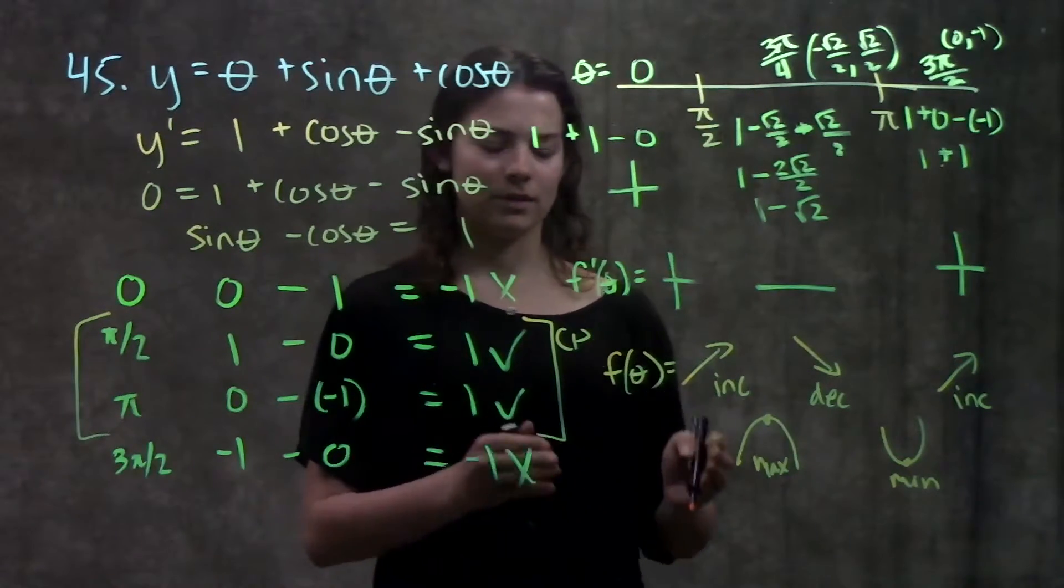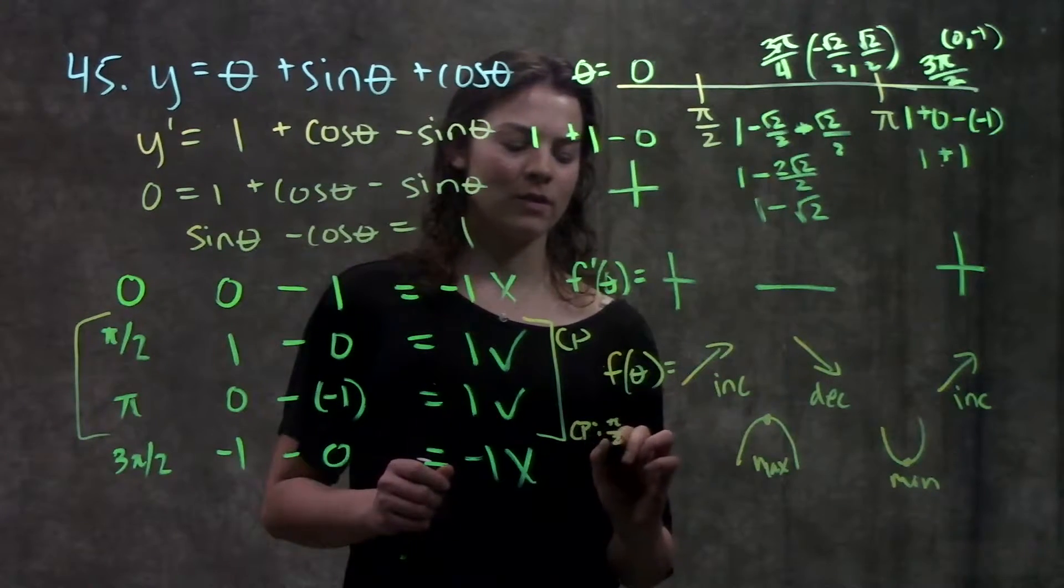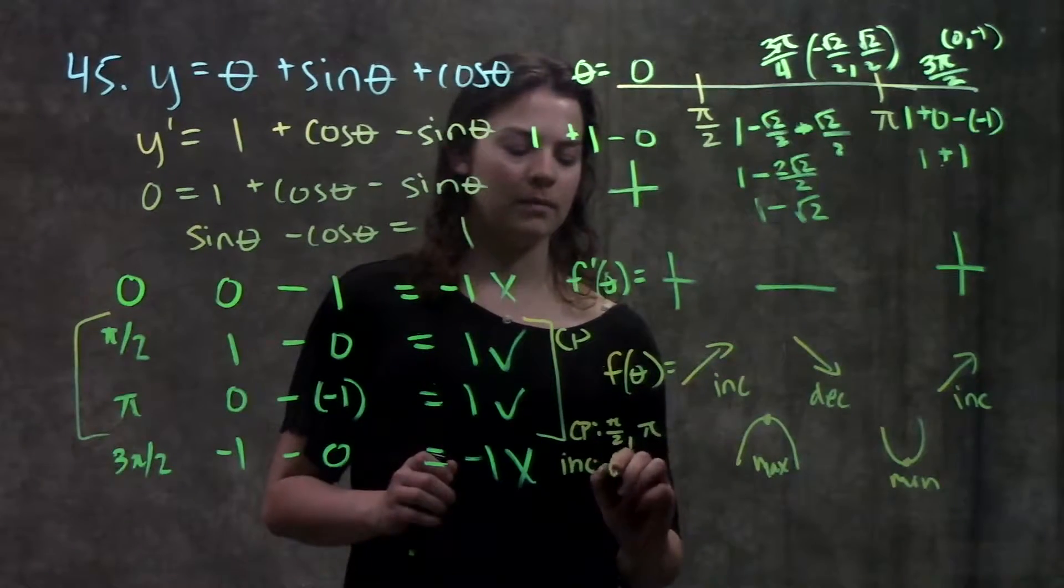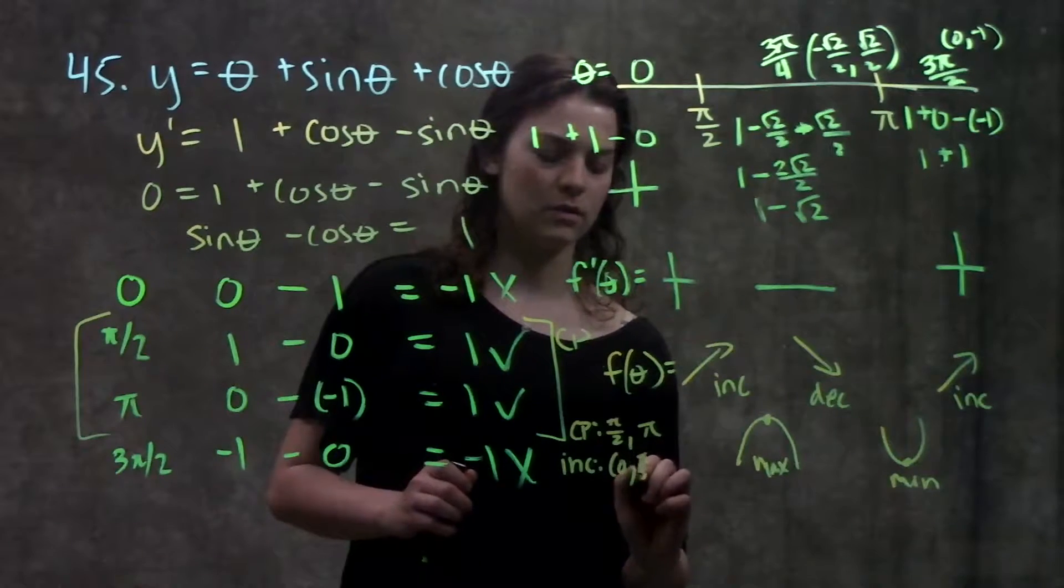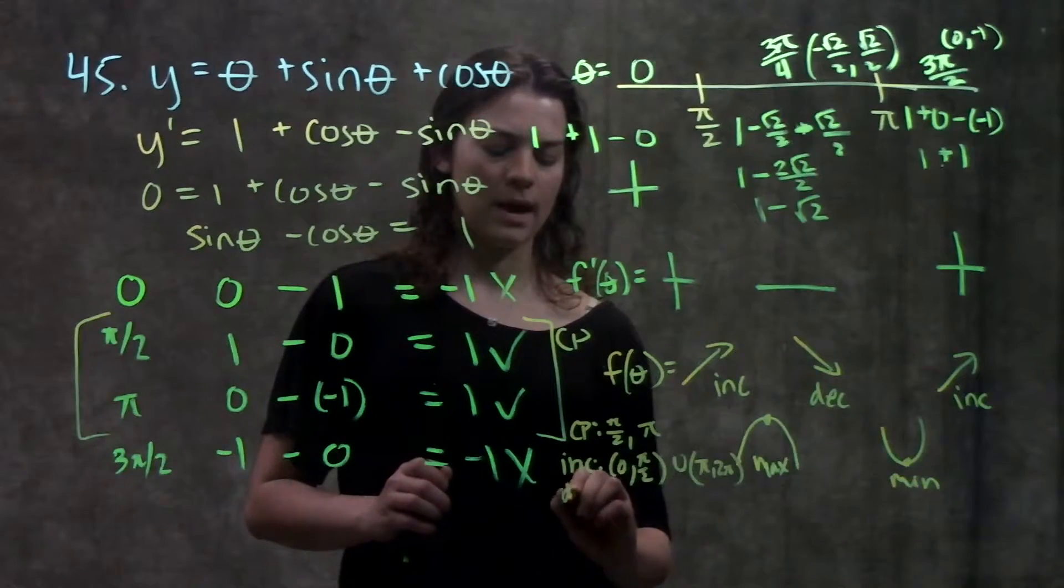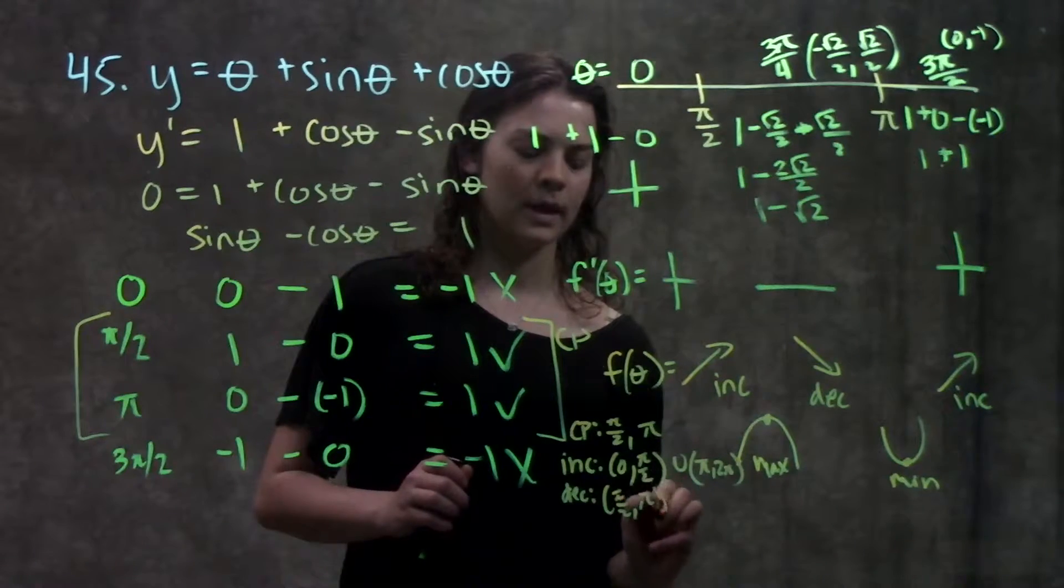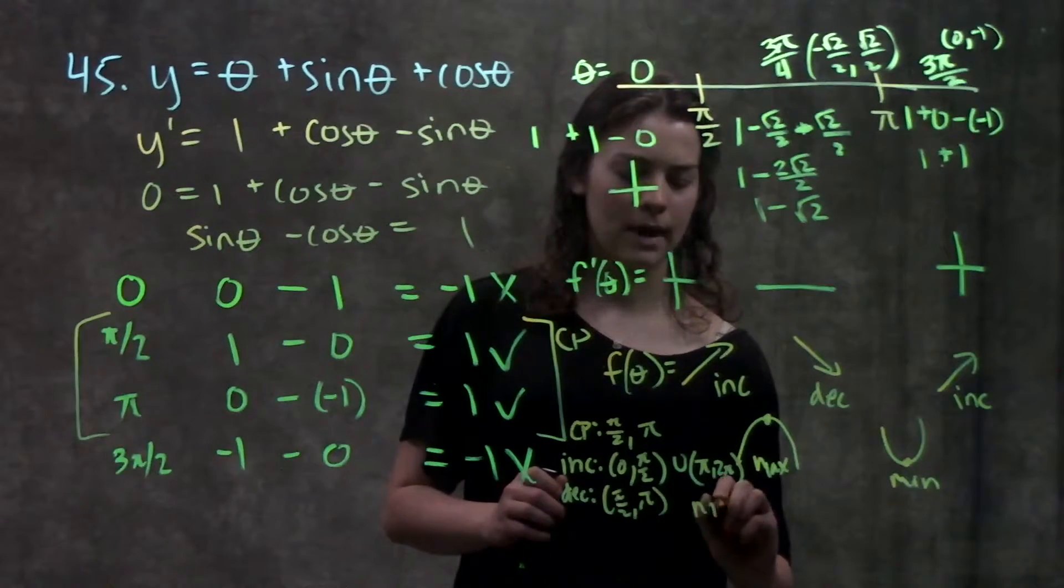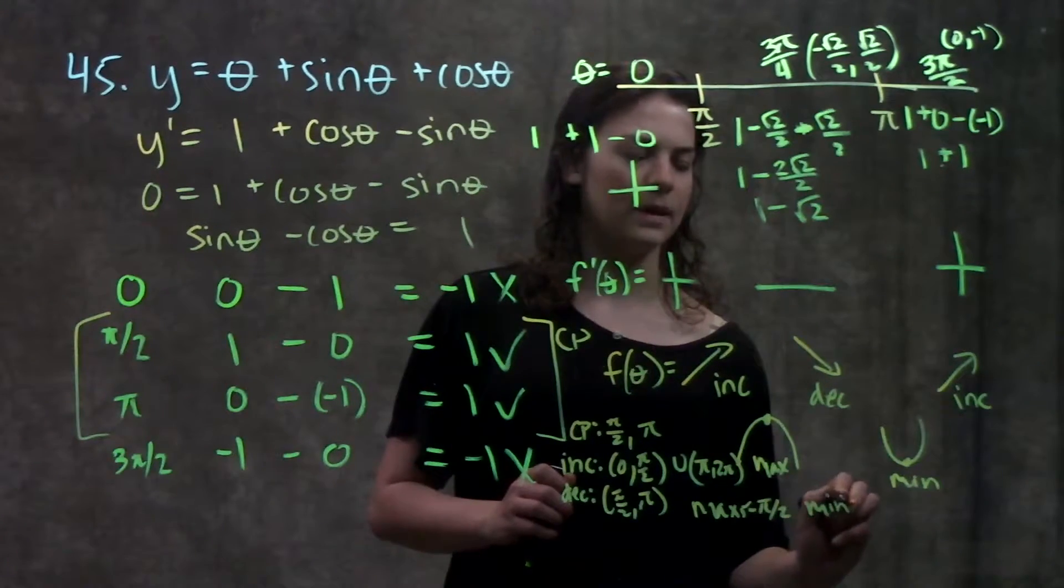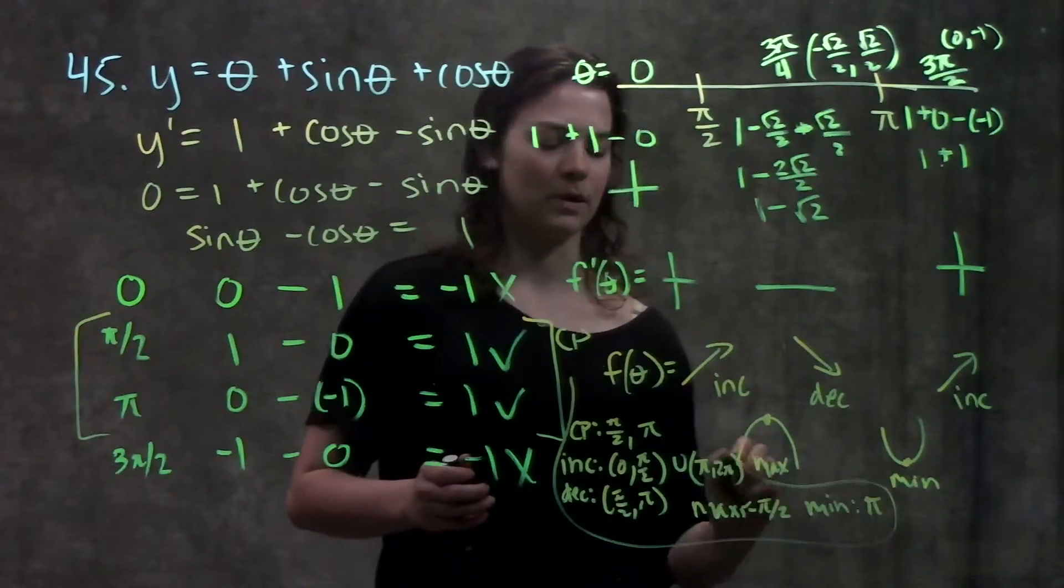So let's write all of our answers in one very tiny location. So I know my critical points are pi over two and pi. I know my interval of increasing is from zero to pi over two and from pi to two pi. I know my interval of decreasing is this part in the middle from pi over two to pi. And I know that my max happens at theta equals pi over two. And my min happens at theta equals pi. And that's it for this problem.